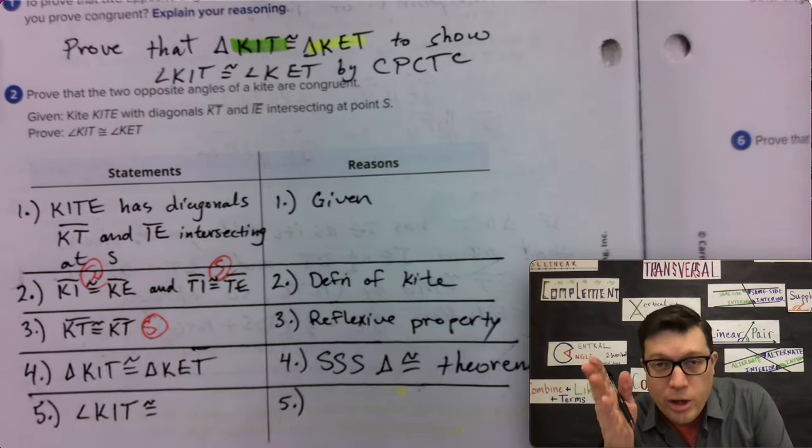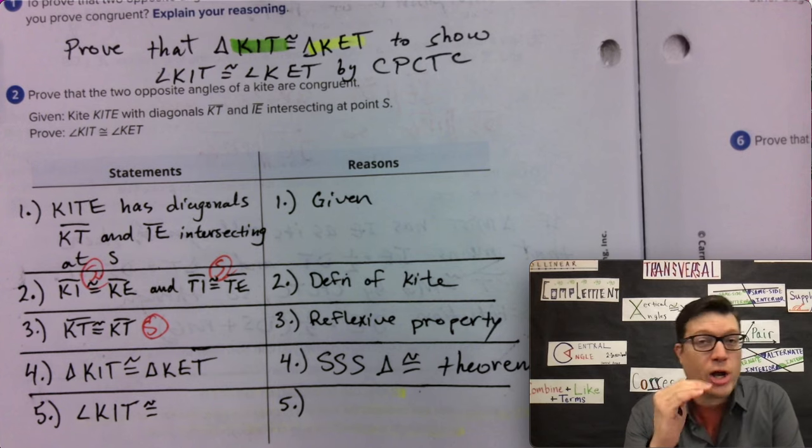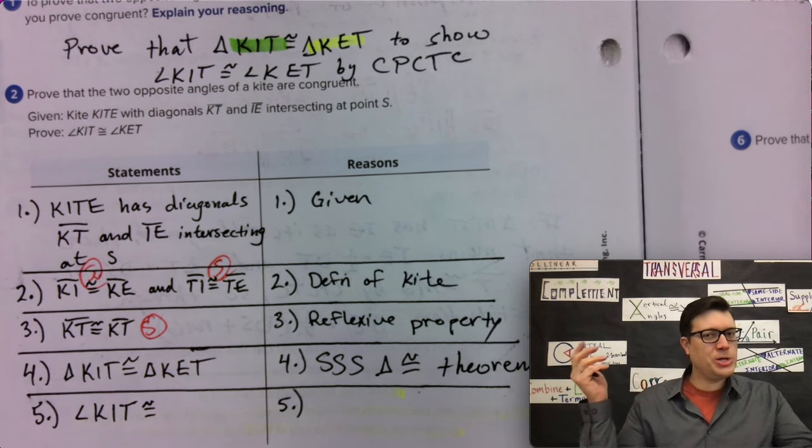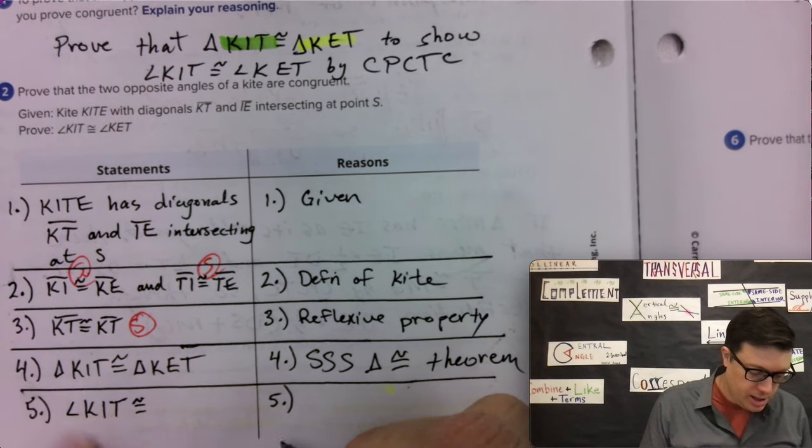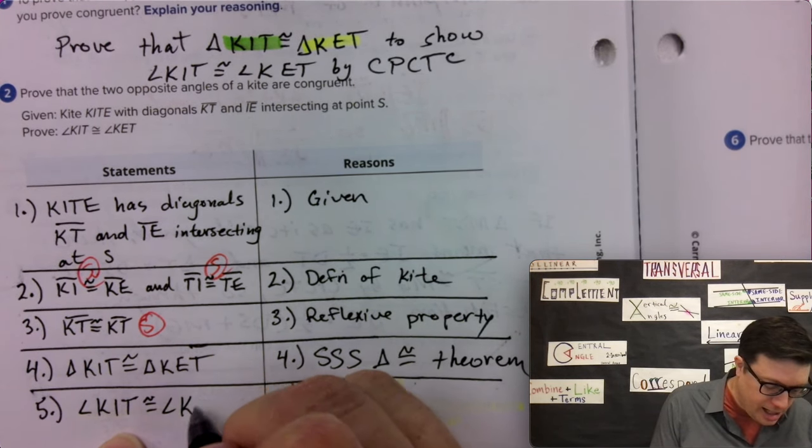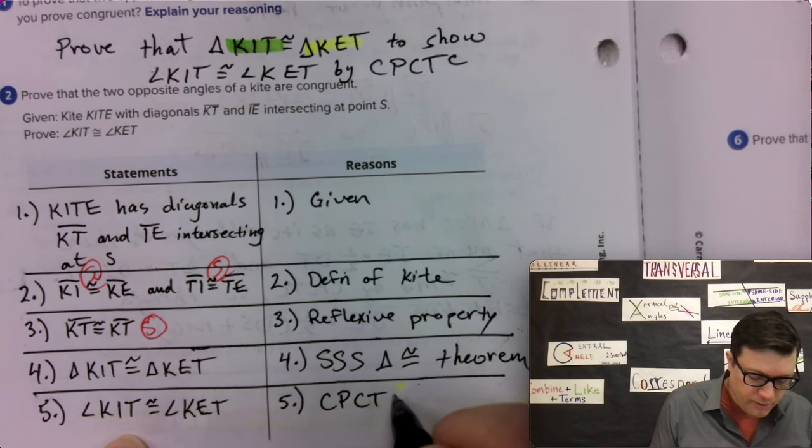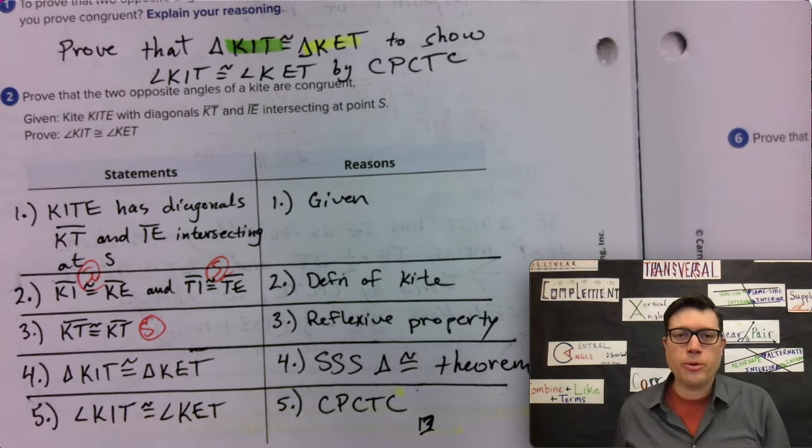And if the triangles are congruent, then the parts of the triangle that correspond to the other triangles parts, the triangles are congruent, the parts are congruent. Angle KIT is congruent to angle KET by corresponding parts of congruent triangles are congruent. And there is our proof.